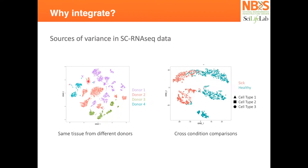For example, here you have PBMCs from four different donors and they are completely separated. Here is another way of seeing the batch: the cells are actually in the same cluster, but the cluster is divided by donor. You can clearly see that on the left you have the healthy, and on the right you have the sick patients. That can also be biologically meaningful, but you would not expect or want to have the cells divided by batch like this.